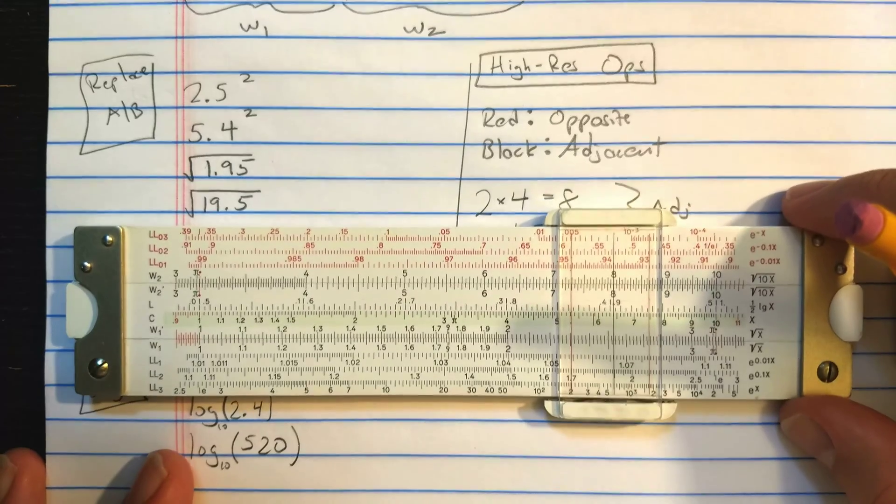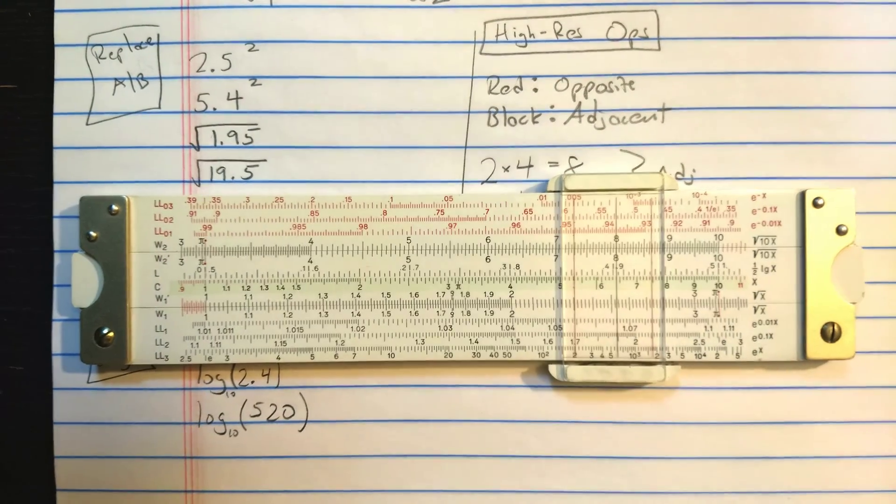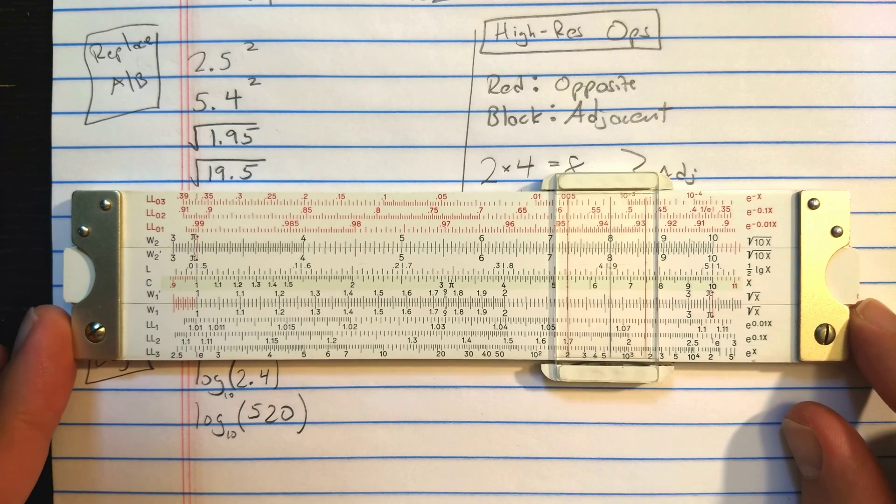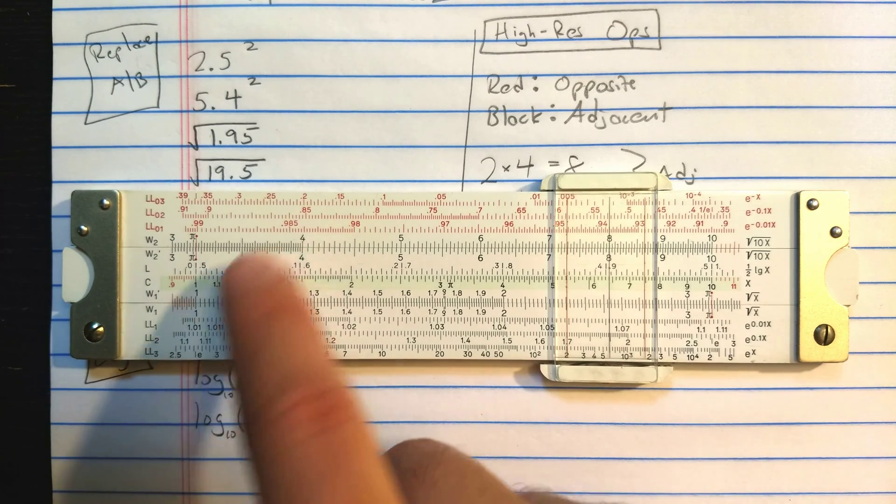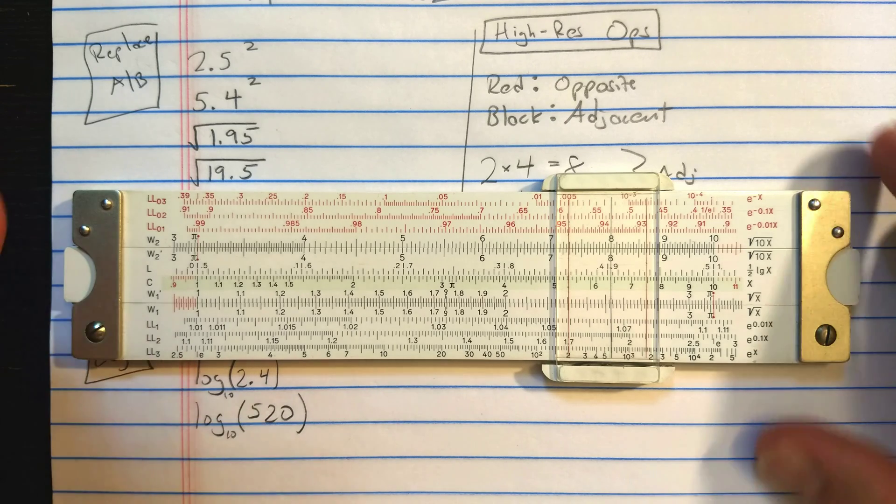You might know how to use them to some degree if you've used a VersaLog slide rule or a Pickett slide rule with square root scales, because W1 and W2, they are the same as those square root scales you see on those slide rules. The difference here is that we have those scales both on the base and on the slide, so we can use them in more ways than you can on a VersaLog.